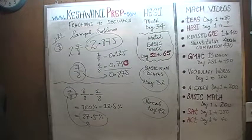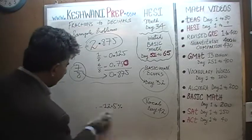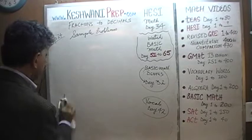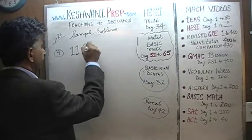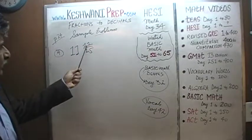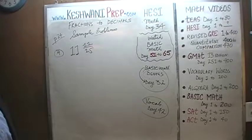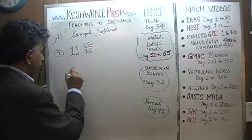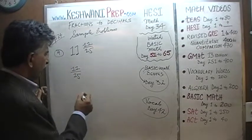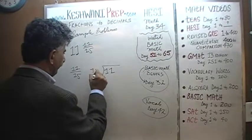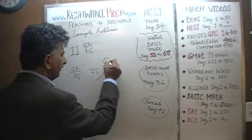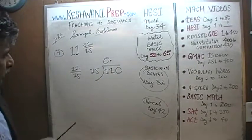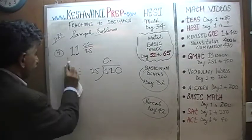Question number 9 is asking us to convert 11 and 11/15 into decimal. As you can see, 11 and 15 have nothing in common, so the only way to figure out what that is in decimal is to actually divide it out. We will divide 11 by 15. Since 15 is larger than 11, we introduce a decimal point and a zero, making it 110. How many 15s are there in 110?